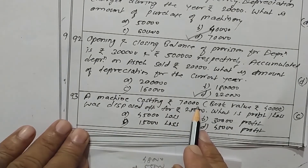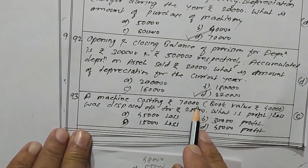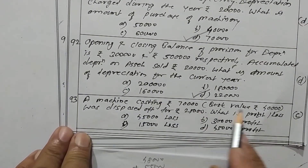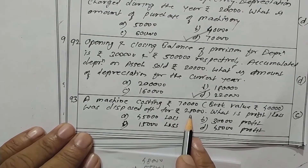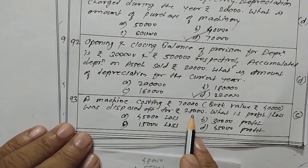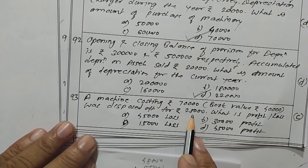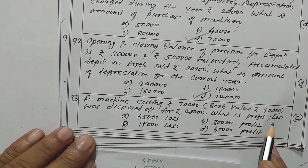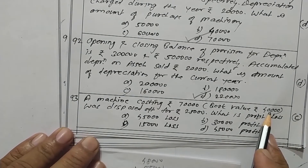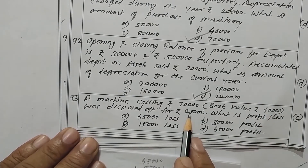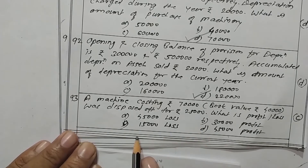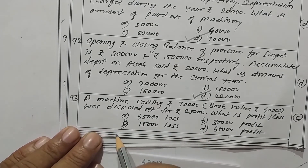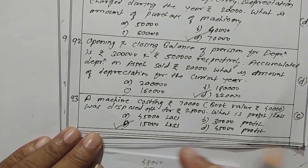Machinery costing rupees 70,000 with book value of rupees 40,000 was disposed of for rupees 25,000. Book value is 40,000, sale price is 25,000, so the loss is rupees 15,000. Option C is the correct one.